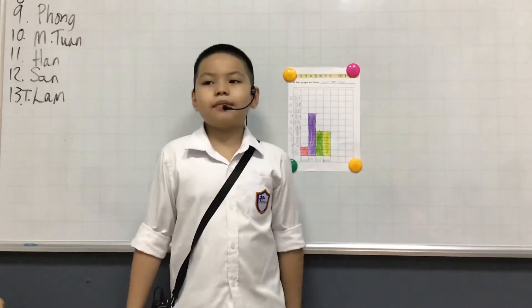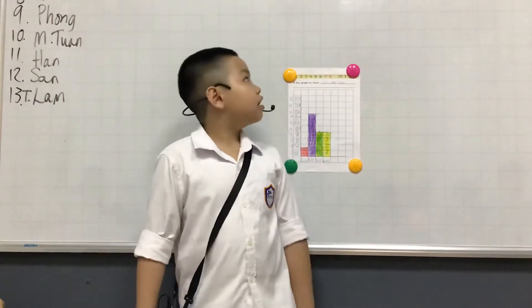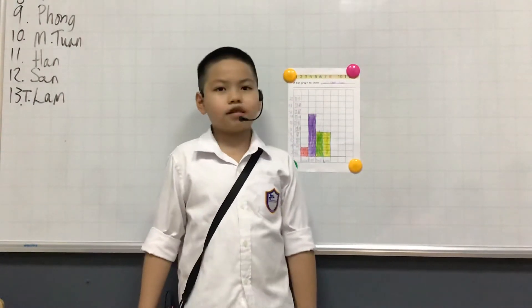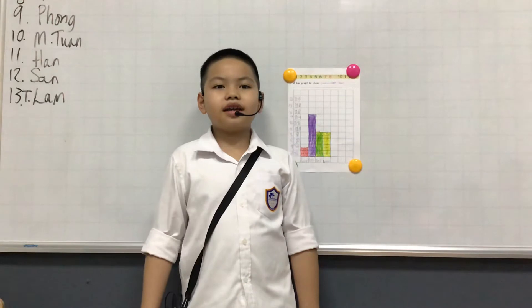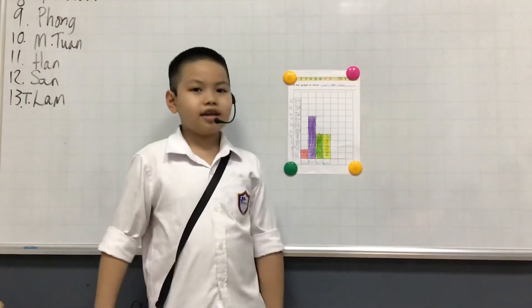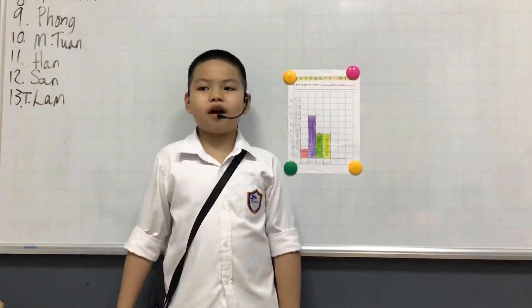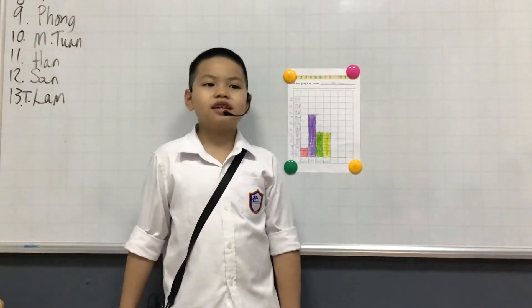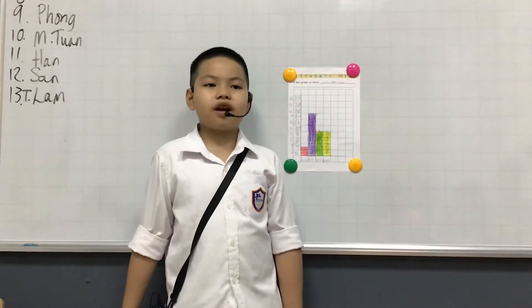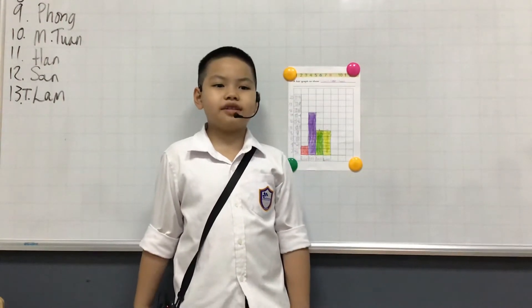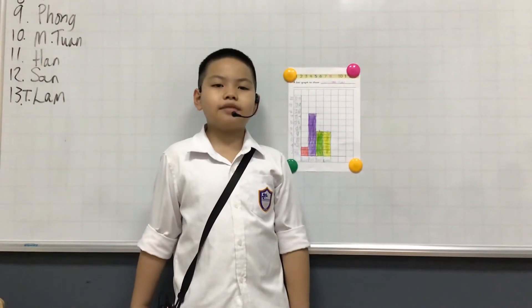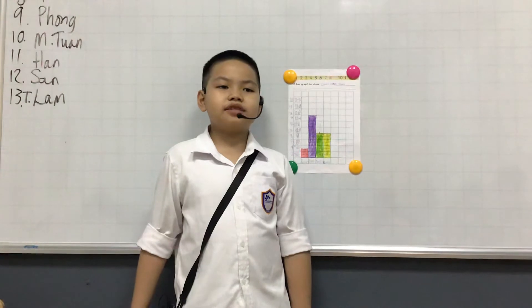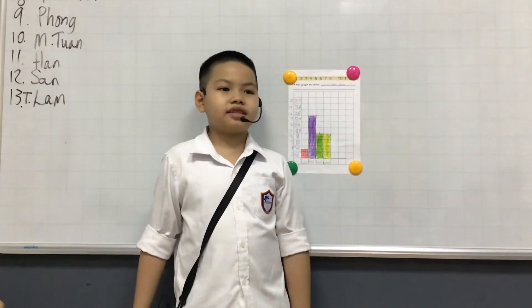The number of rulers is 3, the number of pens is 40, the number of pencils is 8, and the number of erasers is 8.